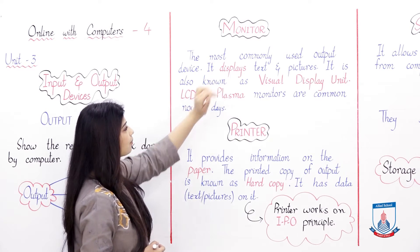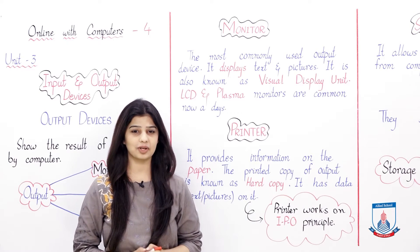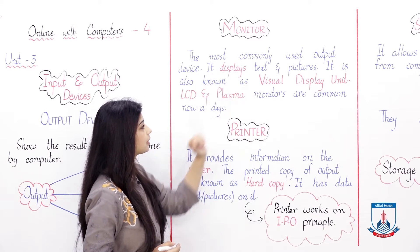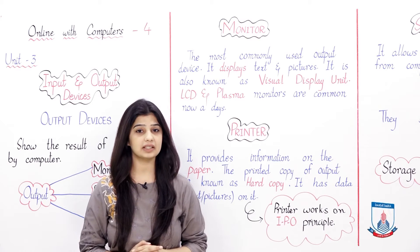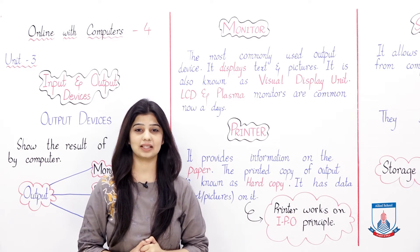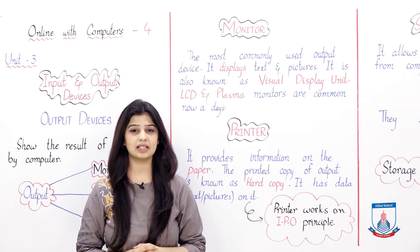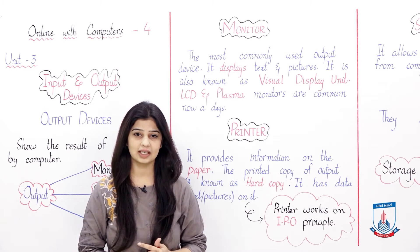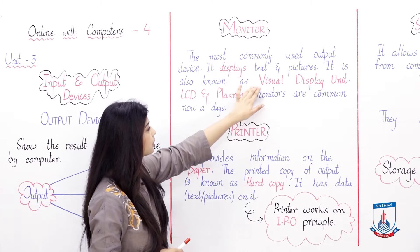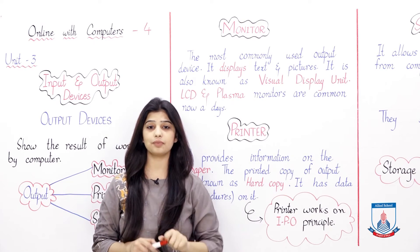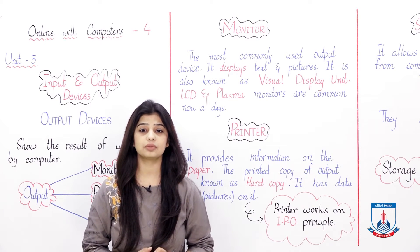The most commonly used output device — we use it with our computers. It displays text and pictures. Where do we see text and pictures? On the computer's monitor screen. You can see LCD monitors and all your information, pictures, and text on it. So what is it? It is a monitor. It is also known as a Visual Display Unit.